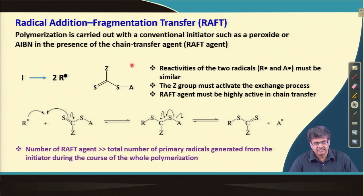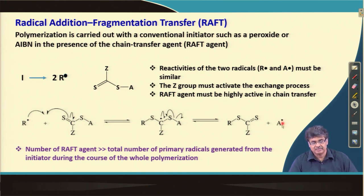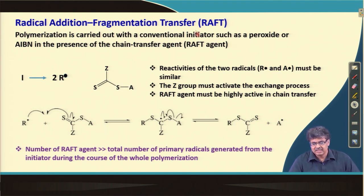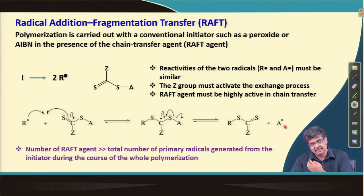Typically the concentration or number of chain transfer agents is much higher compared to the initiator molecules. So as soon as the initiator molecules are generated, they will react with the RAFT agent and form a dormant species, which can further fragment to produce a radical A•, which can react with monomers and take part in the polymerization reaction.